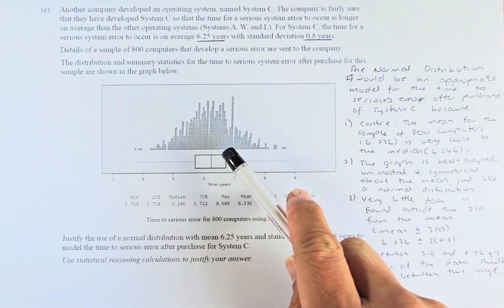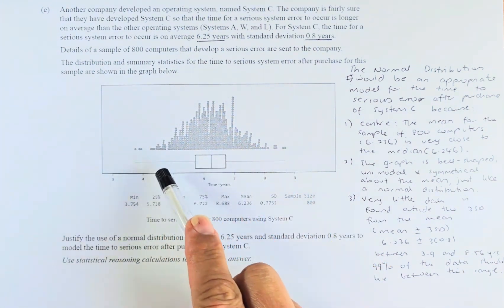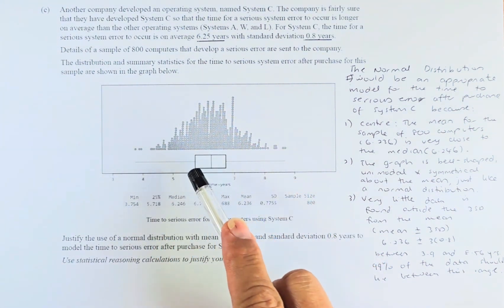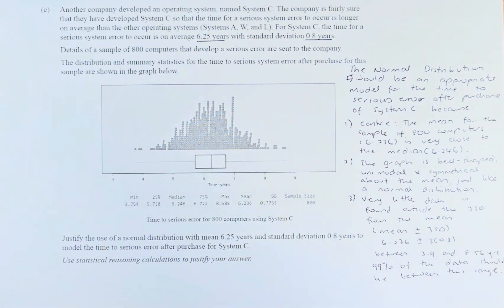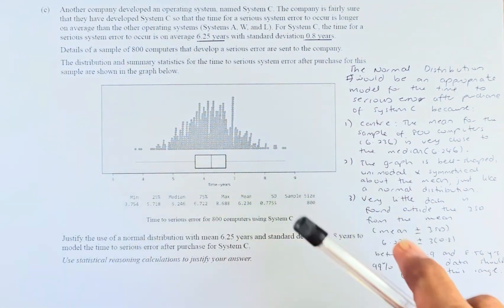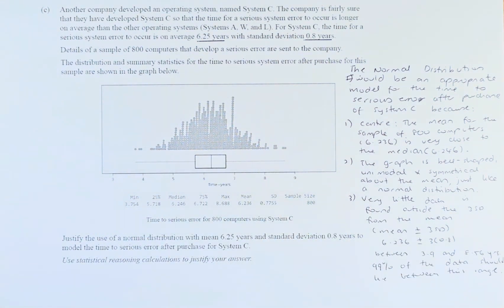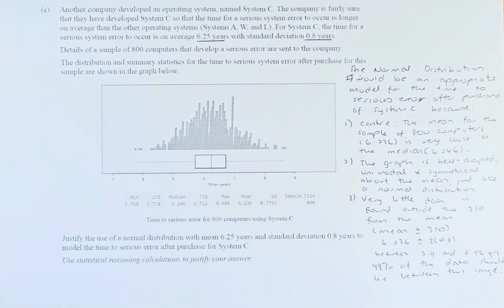This is the graph and this is the 5-point summary: the minimum, lower quartile, median, upper quartile, and the maximum. The numbers are given here. Justify the use of normal distribution with a mean of 6.25 years and standard deviation of 0.8 to model the time to serious error after purchase for System C.